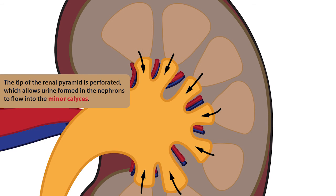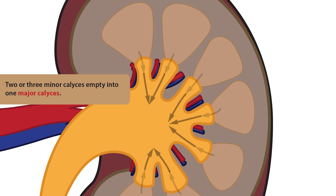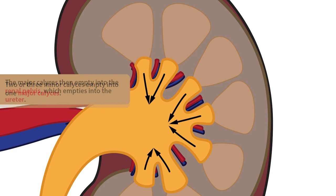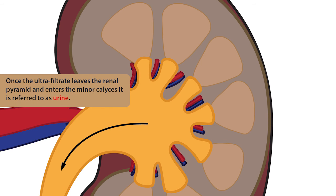Two or three minor calyces empty into the major calyx, which then empties into the renal pelvis, which empties into the ureter, which then empties directly into the bladder. Finally, it's important to note that once the ultrafiltrate leaves the renal pyramid and enters the minor calyces, it is referred to as urine.